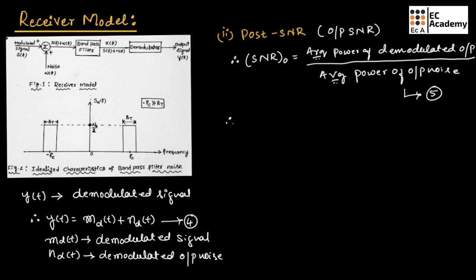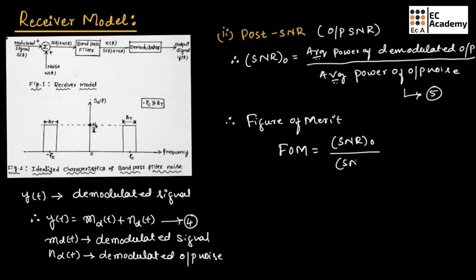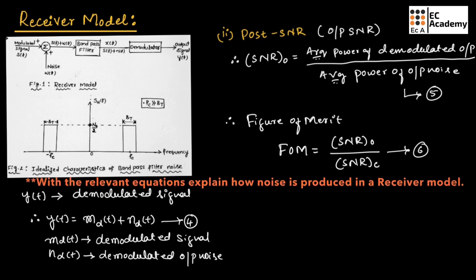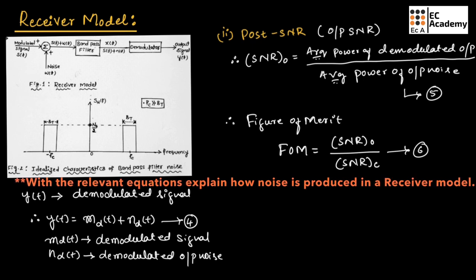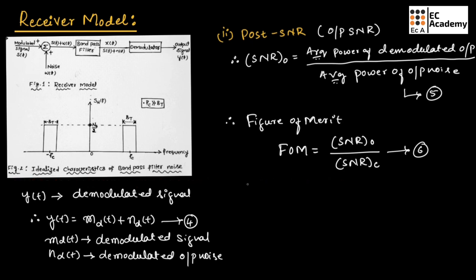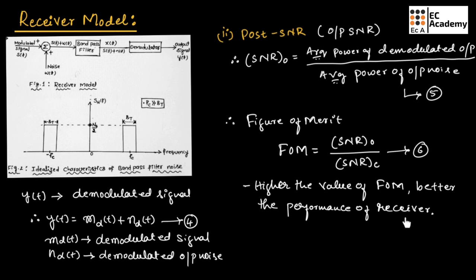Finally, we can find the figure of merit (FOM), which equals the output signal-to-noise ratio divided by the channel signal-to-noise ratio. The higher the value of the figure of merit, the better the performance of the receiver. The same procedure is used to derive the figure of merit for different analog modulation techniques. This concludes the discussion of the receiver model in communication system.